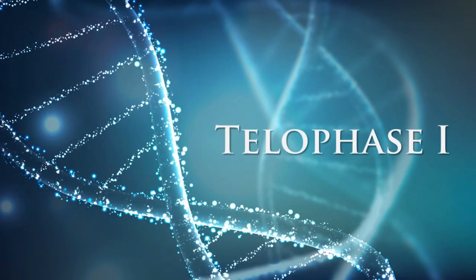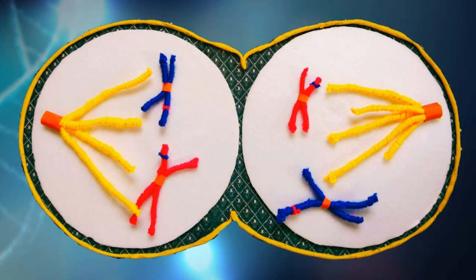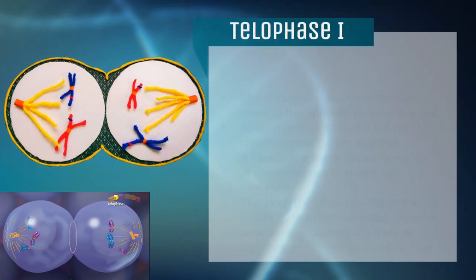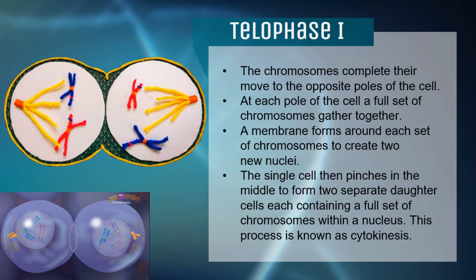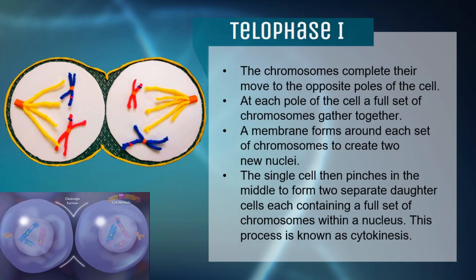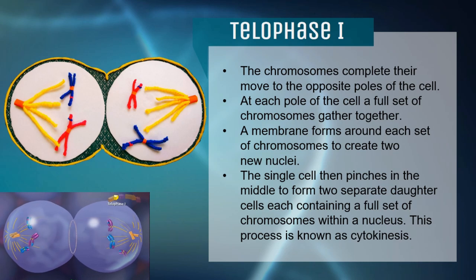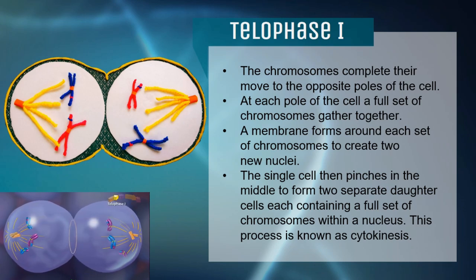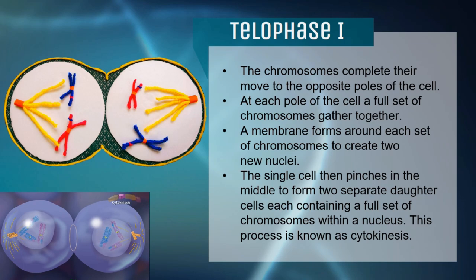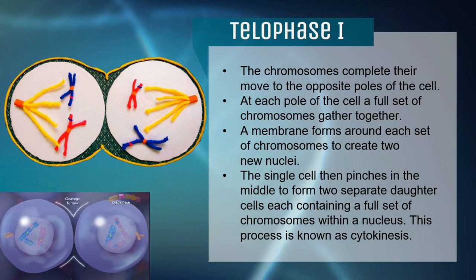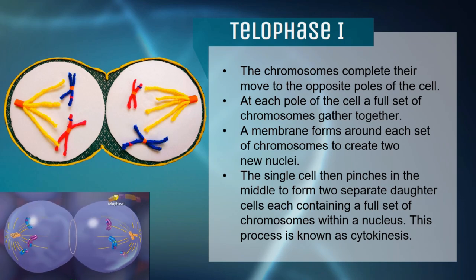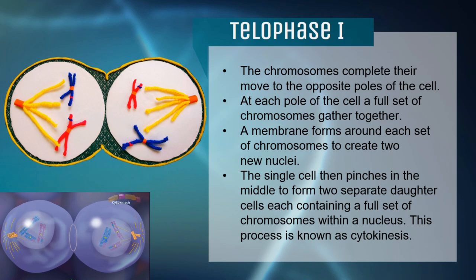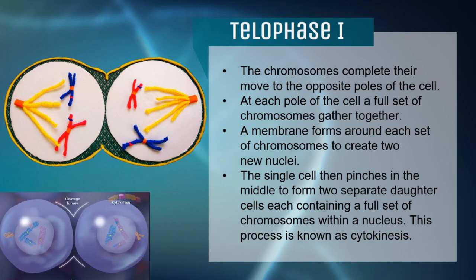And then we move on to Telophase I — here is a lovely model designed by one of my teammates. In Telophase I, the chromosome pairs complete their split and move to different poles of the cell. At each pole, a full set of chromosomes gathers and a membrane forms around each set to create two new nuclei. The single cell then pinches in the middle to form two separate daughter cells, each containing a full set of chromosomes. This process is known as cytokinesis.